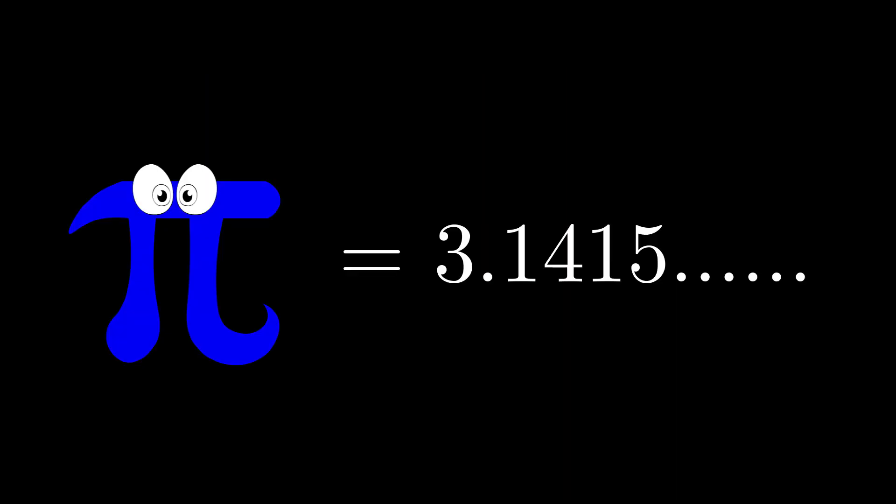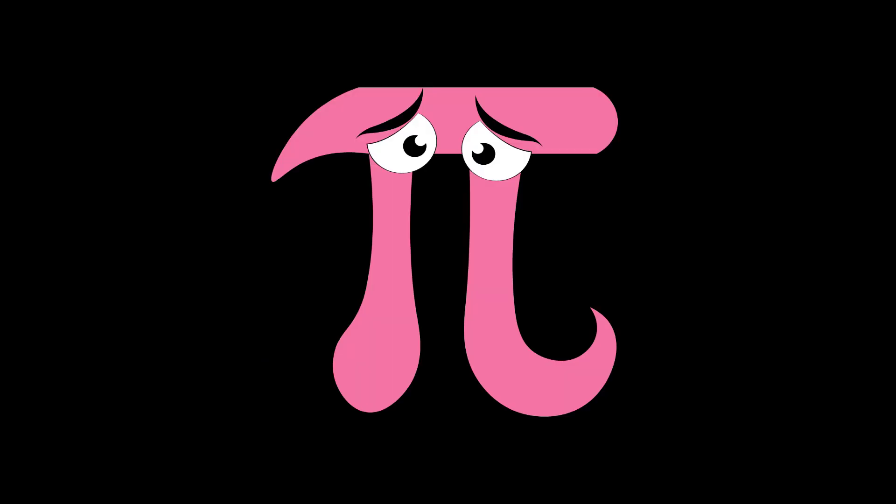If pi were computed to many many places and the digits began to recur, then this would suggest strongly that it is a fraction. It would not be a conclusive proof, but once the right answer were known, it might spur the hunt for a proper argument. However, this did not happen. No matter how far the computations were pushed, the digits did not recur cyclically.